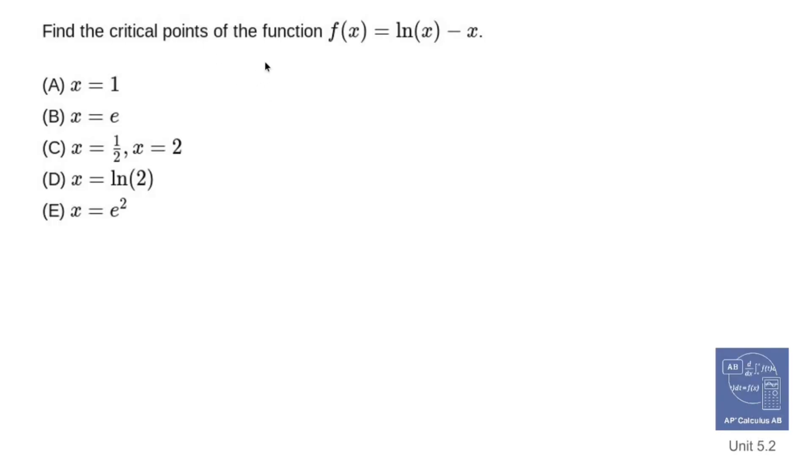Find the critical points of the function f(x) equals ln of x minus x. Critical points exist when f prime of x equals 0. So what I have to do is take the derivative and set it equal to 0 and solve for x. So f prime of x is going to equal the derivative of ln of x, which is 1 over x, minus the derivative of negative x, which is minus 1. So let's set that equal to 0.